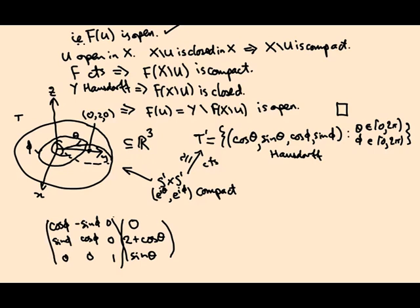You can multiply it out for yourself if you want. But certainly it's continuous. This depends on theta and phi through cos and sin and matrix multiplication is continuous. So this is also continuous. And by the same argument, it's a homeomorphism. Because this is a compact space. This is a Hausdorff space because it's a subspace of a Hausdorff space.